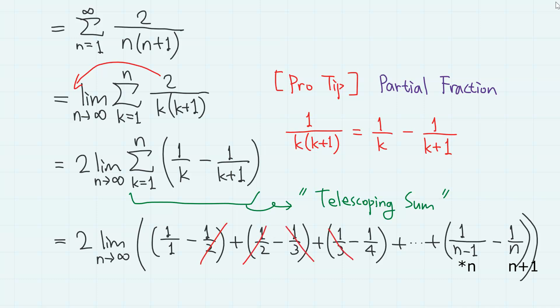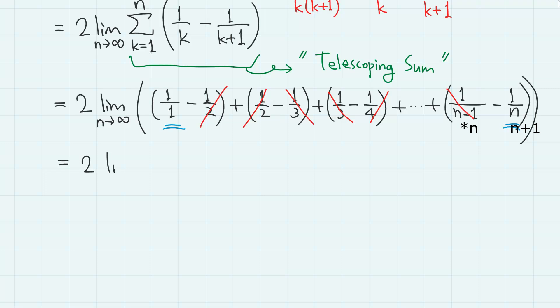As you can see, all the terms in the middle get cancelled out. So, we only have this and this. So, 2 times limit of 1 minus 1 over n, which just gives 2 times 1, which is 2. So, that was the first problem.